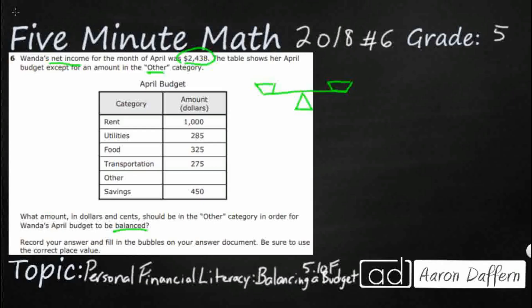We have our income over here — this is going to be money in. And it says for her, she's got $2,438. And this is her net income. That's going to be important. A net income is money you actually get after taxes, after payroll deductions. This is actual money that she walks away with.